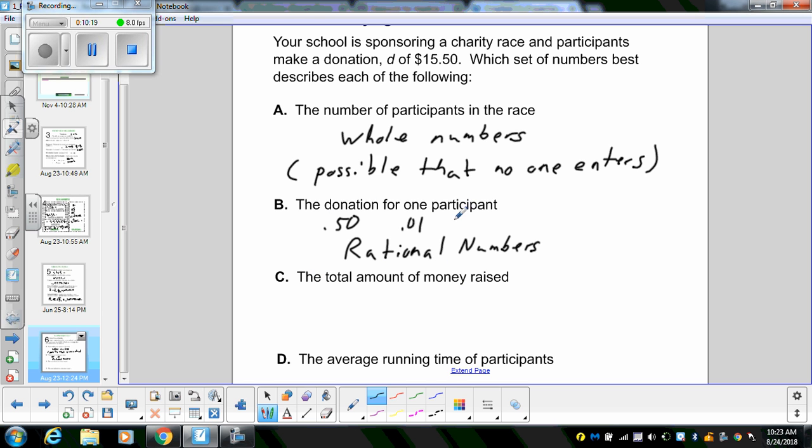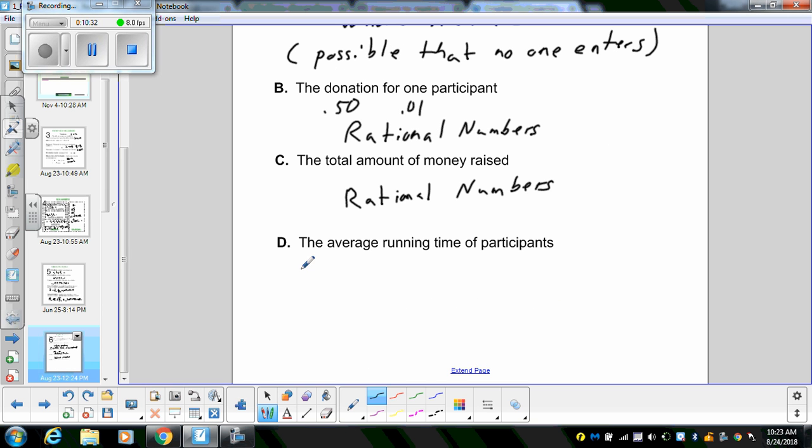So just because it's rational numbers doesn't mean it has to include negative values, but it's just because it has decimals, rational numbers will cover more than just whole numbers. The total amount of money raised, because someone can give us cents, we still fall in the lines of rational numbers. And then the average running time of participants. They may be really fast and be done in one second. They might actually go one minute and 15 seconds. So depending on how you actually want to write that in minutes or seconds, as a decimal in minutes, this would actually be 1.25 minutes, which then has a decimal, so it falls under the line of a rational number.